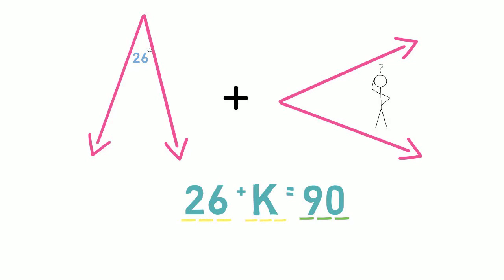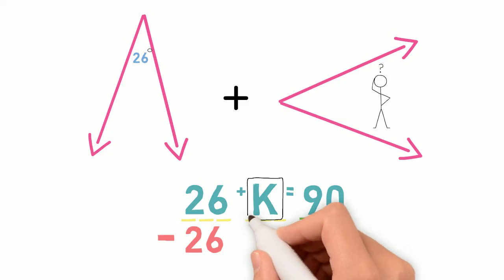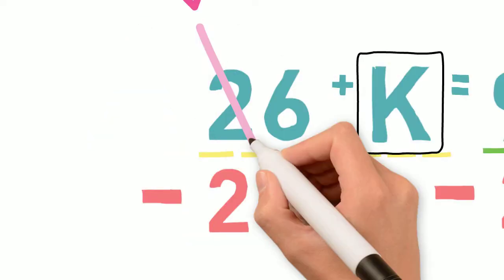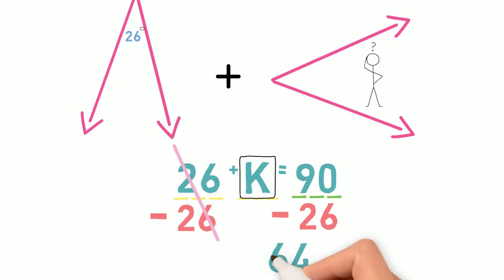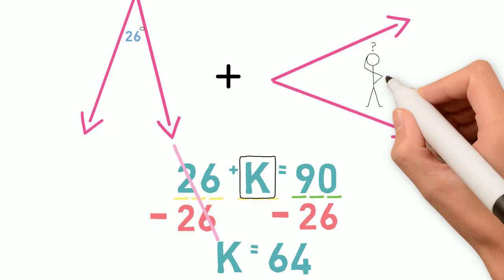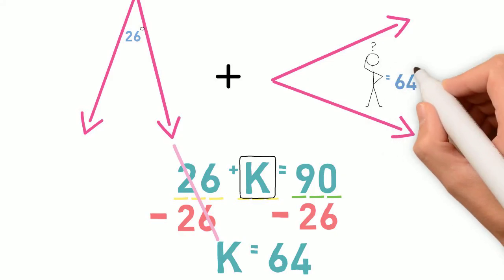If we subtract 26 from both sides, we will isolate our variable by itself to get the angle measurement we need. So 26 minus 26 equals 0, and 90 minus 26 equals 64. The angle measurement we need to make a complementary angle with 26 is a 64 degree angle.